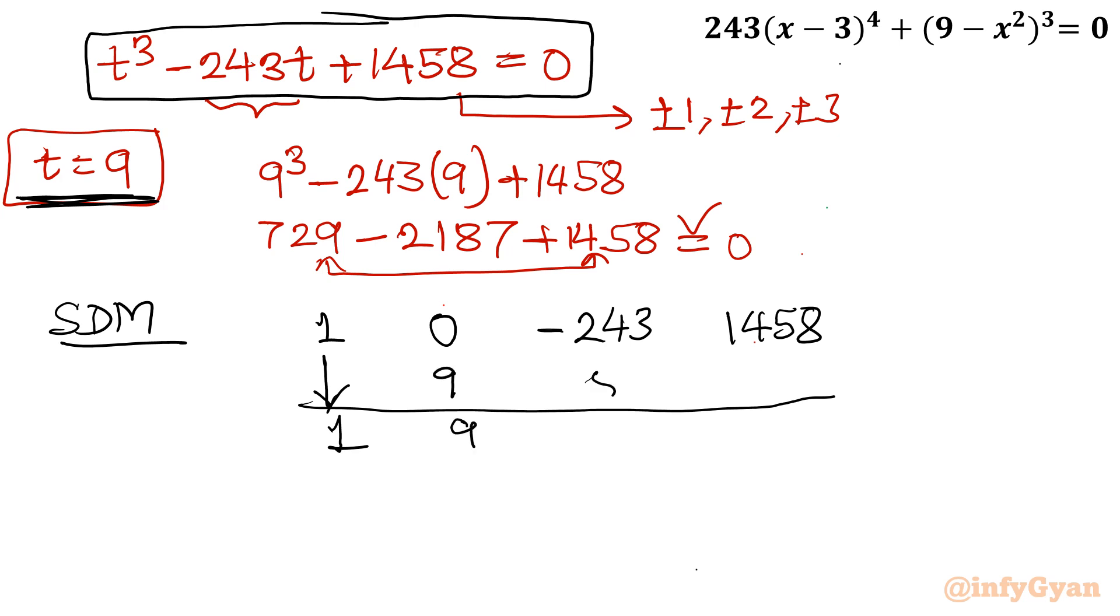9 times 9 is 81. Then I will write minus 162. 9 times minus 162, that would be minus 1458. Now this cubic converts into quadratic in t: t² plus 9t minus 162 equal to 0. Let us apply quadratic formula.